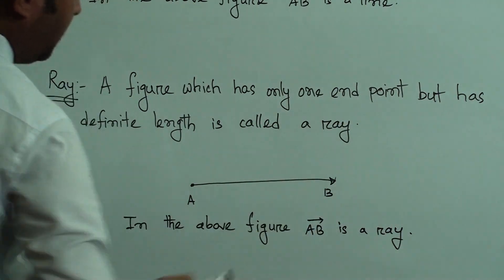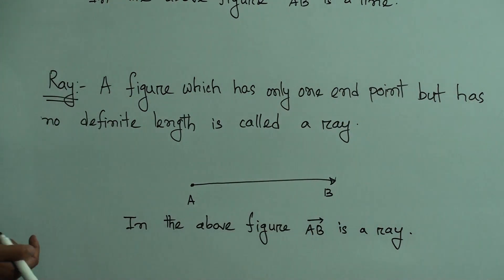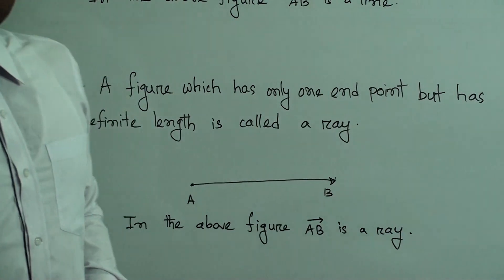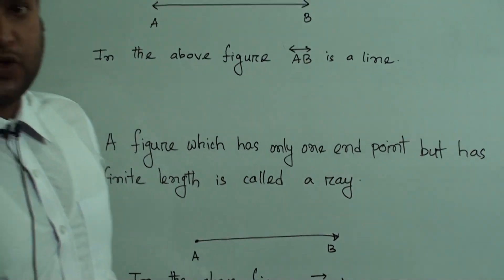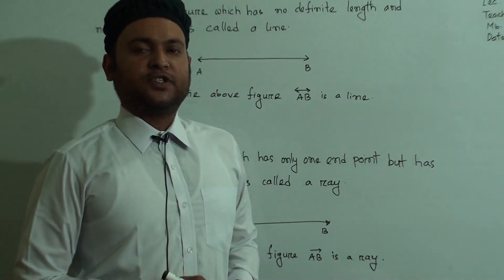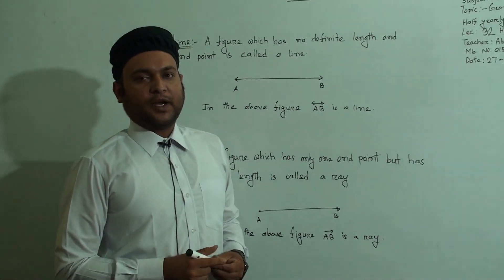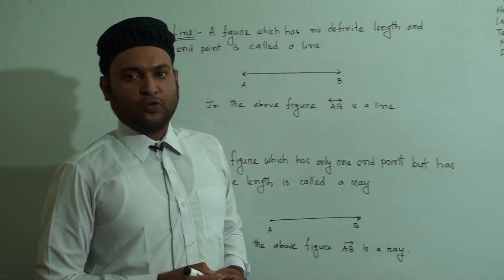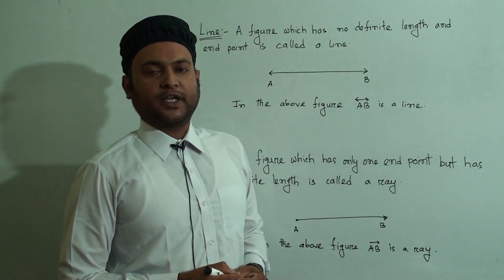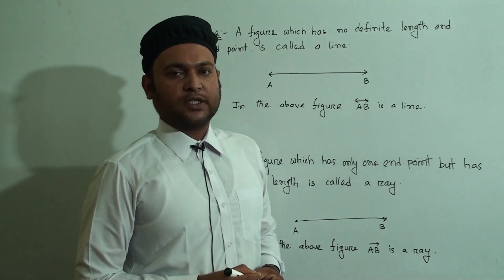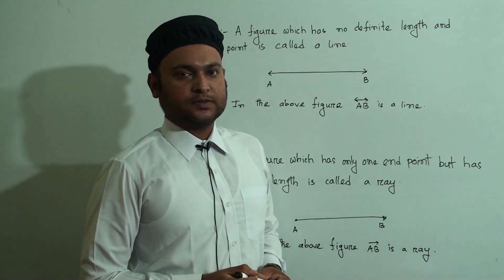So a ray has only one end point and has no definite length. Hope you understood the definitions of line and ray. Practice it on your own more and more. Take care of yourself. See you soon. Until then, I love this.